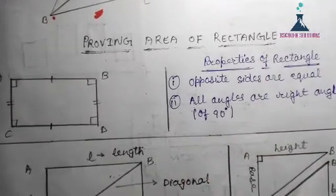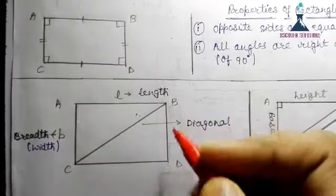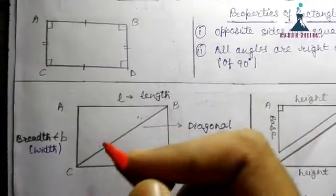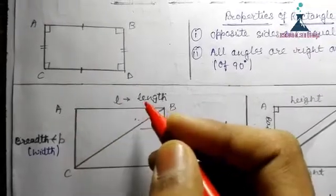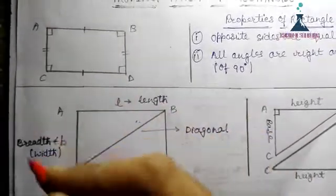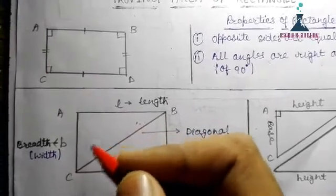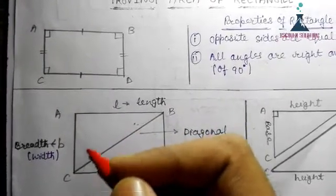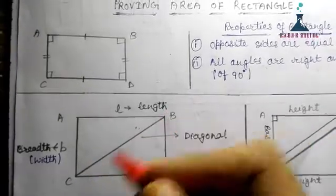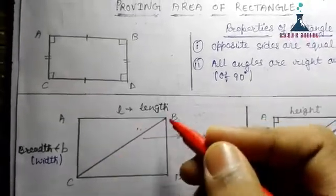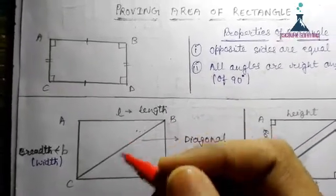As you can see, I've taken rectangle ABCD here, and BC is a diagonal. Length is the longest side and breadth is the shortest side of a rectangle. A rectangle is a two-dimensional figure. A diagonal is the line segment which joins two non-adjacent vertices.